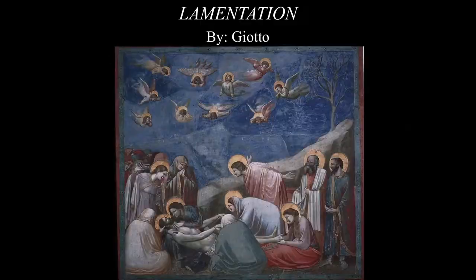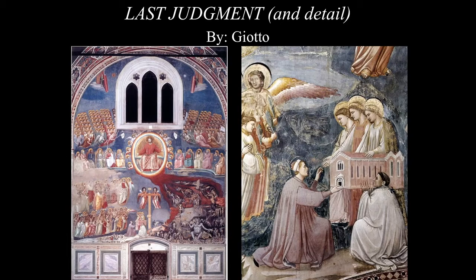The detail at the right of the Last Judgment shows the owner of the Arena Chapel, Enrico Scrovini, offering it to the Virgin Mary — basically his way of buying entrance into heaven, which was totally acceptable during this time, very much like buying an indulgence from the Pope. Enrico Scrovini had committed the sin of usury and needed to atone for it. That's why the Arena Chapel was built. It's not uncommon for the patron — the one paying for the work — to appear in the artwork itself.